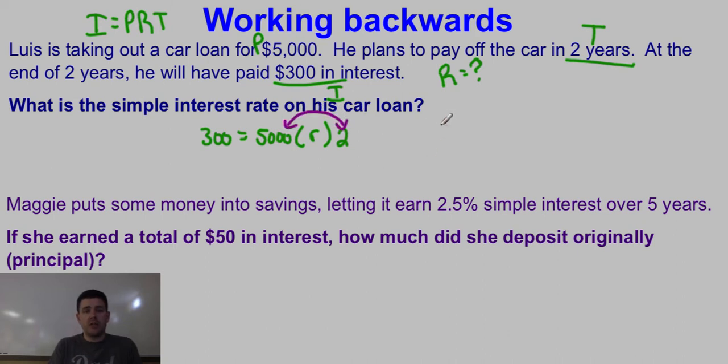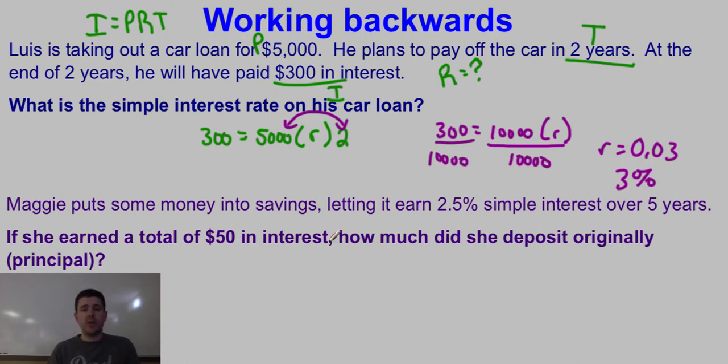Multiply the pieces together that you can. $300 equals $5,000 times two is $10,000 times R. Then solve it. I want to get R by itself, so I'm going to divide by $10,000. $300 divided by $10,000 gives me an interest rate of 0.03 or 3%. So all I did was plug in the numbers I know, and then work the problem backwards to find my missing piece of information.